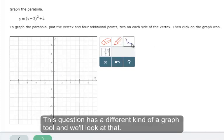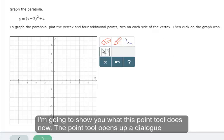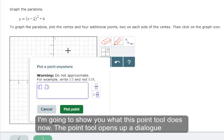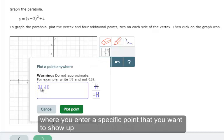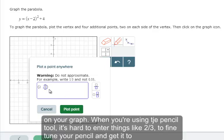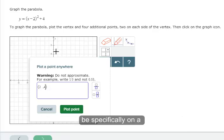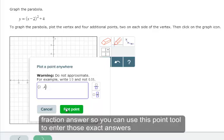This question has a different kind of a graph tool and we'll look at that. I'm going to show you what this point tool does now. The point tool opens up a dialog where you enter a specific point that you want to show up on your graph. When you're using the pencil tool, it's hard to enter things like two-thirds to fine-tune your pencil and get it to be specifically on a fraction answer. So you can use this point tool to enter those exact answers.